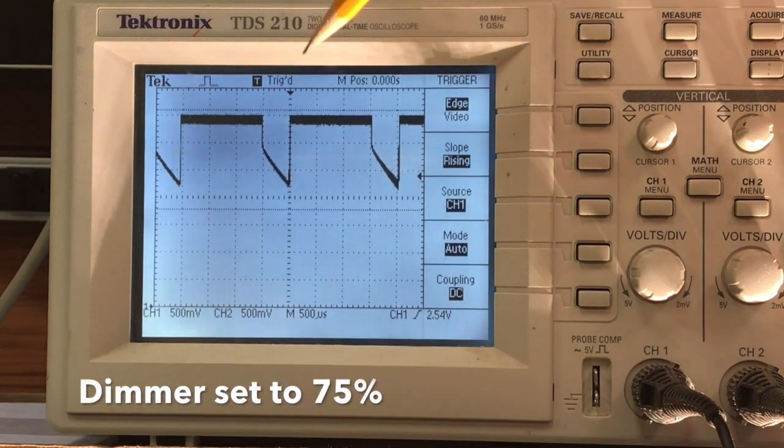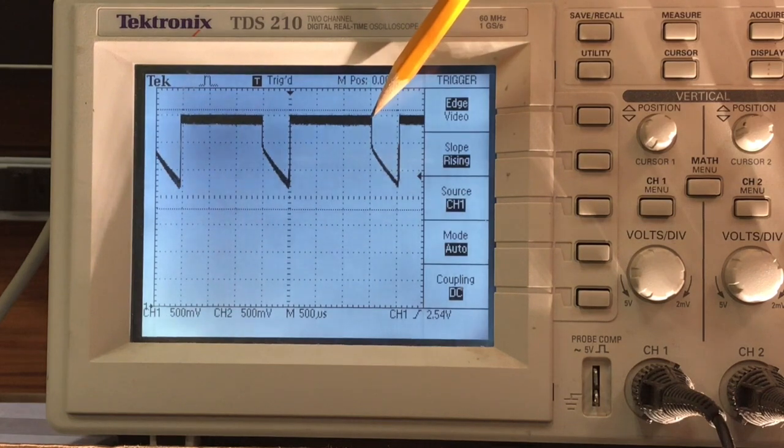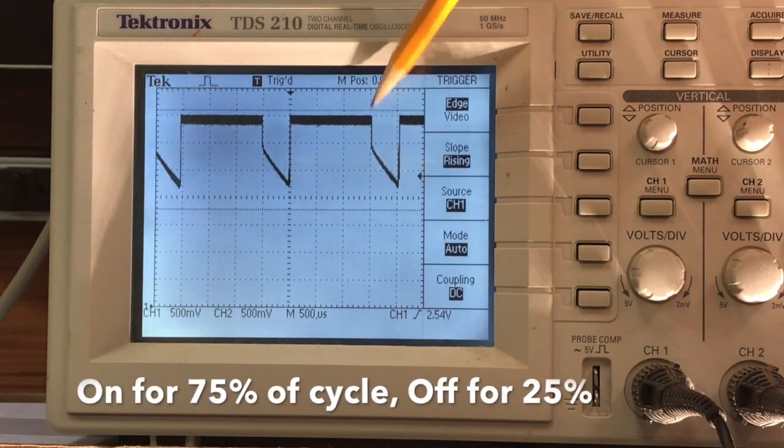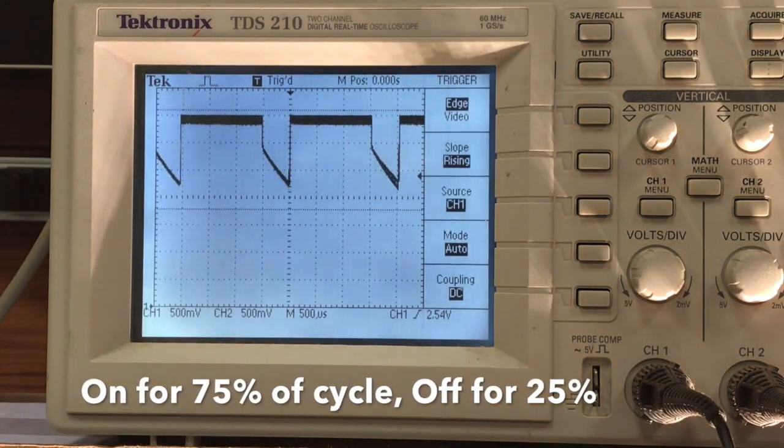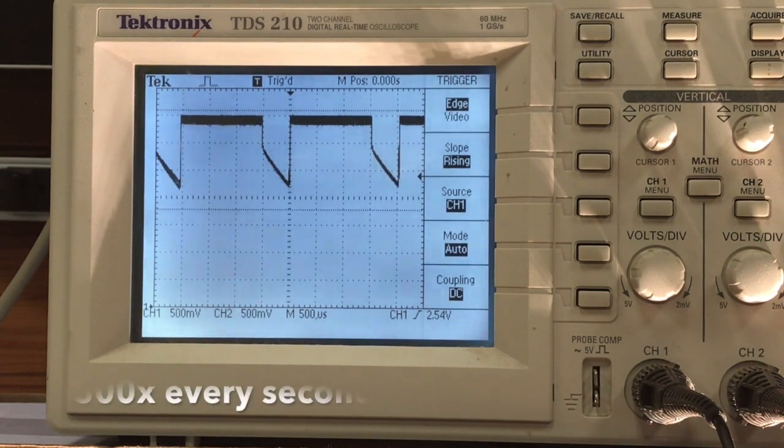We'll jump up here now to 75%. That's showing we're on for 75% of that cycle and we're off for 25%. And that's occurring 500 times every second.